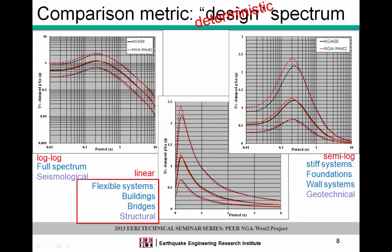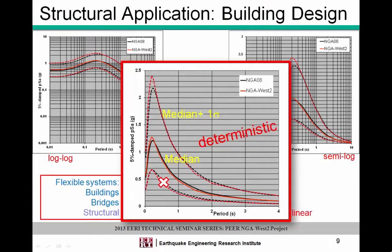You've seen response and design spectra presented in two ways: seismologists prefer the entire period range on a log-log scale, and geotechnical engineers like Nick are more interested in the high-frequency range using a semi-log scale. But structural engineers are really interested in the period range from about a quarter to a half second out to two to three seconds — even four to six seconds for base-isolated structures. So I'm going to look at all this in a linear-to-linear scale for better understanding of what's going on in the period ranges of interest.